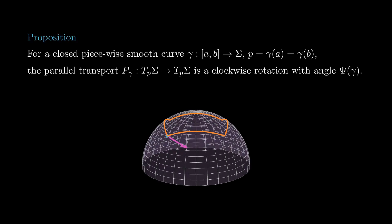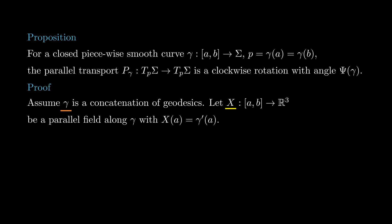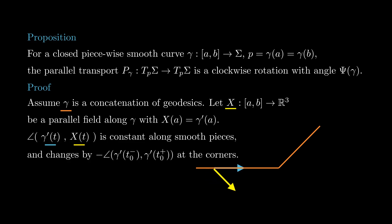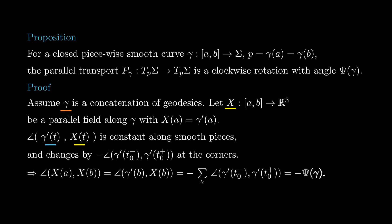It turns out that for a piecewise smooth curve gamma on a surface sigma, the parallel transport along gamma is precisely the clockwise rotation by angle equal to the total geodesic curvature of gamma. To prove this, first assume the closed curve gamma is a concatenation of geodesics. Let x be the parallel vector field along gamma with x(a) = gamma'. Since parallel transport is an isometry, the signed angle from gamma' to x is constant along the smooth pieces, and at each corner it changes by an amount equal to minus the angle of rotation at that corner. Summing over all corners, x(b) — which is the parallel transport of x(a) — is obtained as a clockwise rotation by angle psi of gamma of gamma' at a, which equals x(a). This proves the proposition when gamma is a concatenation of geodesics.